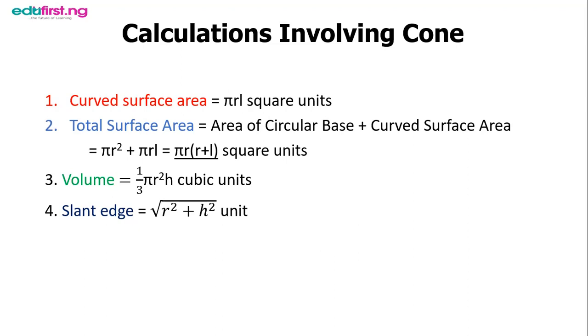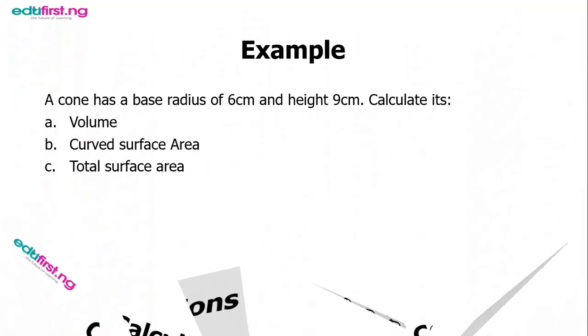Now we'll look at a very good example. A cone has a base radius of 6 centimeters and a height of 9 centimeters. We are told to calculate (a) volume, (b) curved surface area, and (c) total surface area.